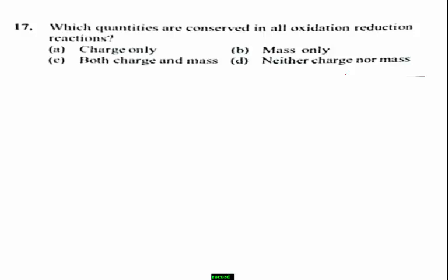Question number 17: Which quantities are conserved in all oxidation-reduction reactions? Options: A) Charge only, B) Mass only, C) Both charge and mass, D) Neither charge nor mass. Both charge and mass are conserved in an oxidation-reduction reaction. Therefore, the right answer is option C.